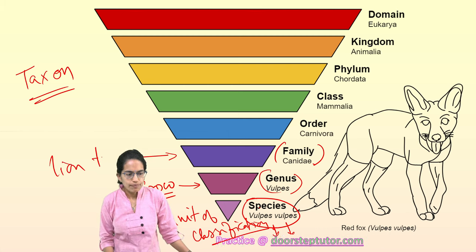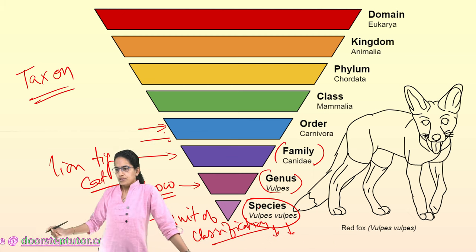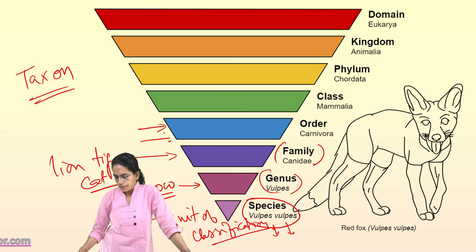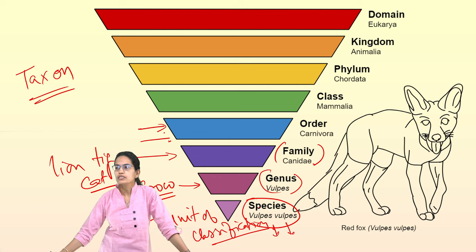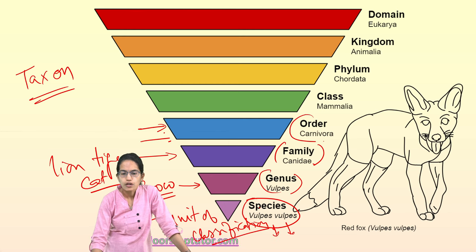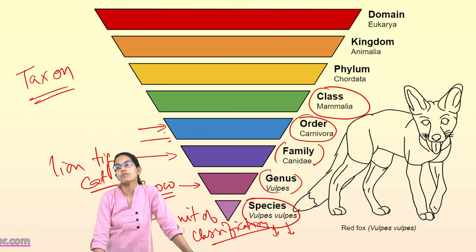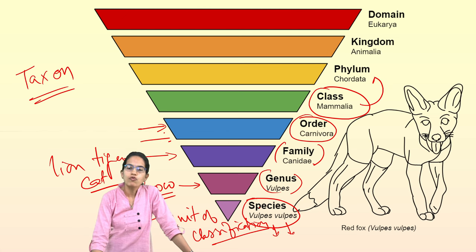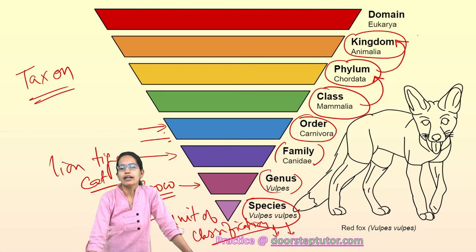The next stage is the order. Order is a much higher-level grouping. For example, Carnivora is an order — tigers, wolves, lions, all carnivorous animals fall under one category called order. All mammals fall under the next category, which is the class. All mammals fall under Chordata, which is the phylum. These Chordata fall under the kingdom Animalia. And finally the domain, which is Eukaryota.